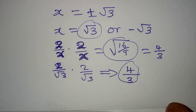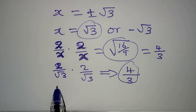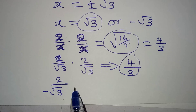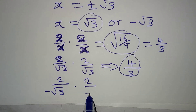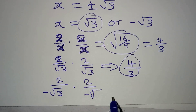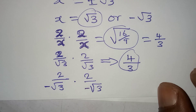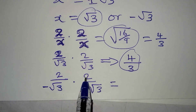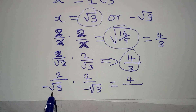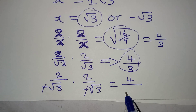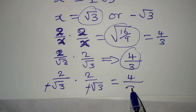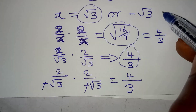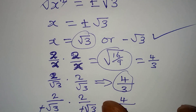Now let's put in the negative. If we put in the negative, we are going to have 2 over negative square root of 3, multiply by 2 over negative square root of 3. If we continue with this, 2 times 2 will give 4, and negative times negative cancel each other, and what we have here will now be 3, because square root of 3 times square root of 3 will still give us 3. So this confirms that both of them satisfy the original equation.